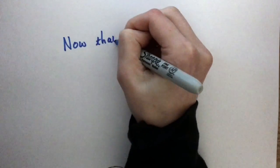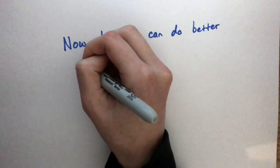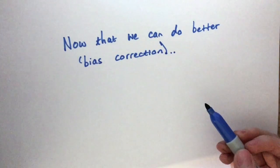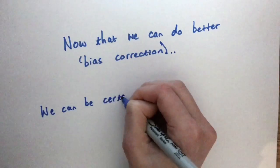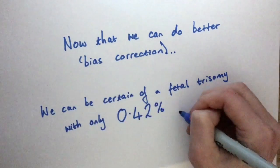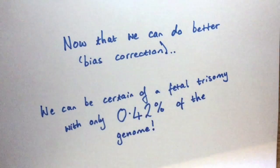Now that we're better at doing this kind of thing, called bias correction, we can be certain of fetal trisomy with only 0.42% of the genome. This was found out in a 2014 study. So in conclusion, this is a massively powerful tool for detection of trisomies.